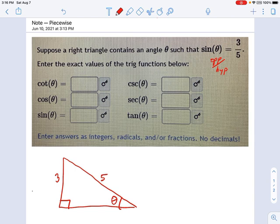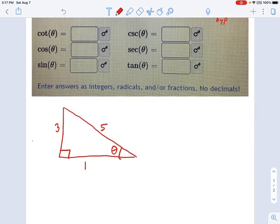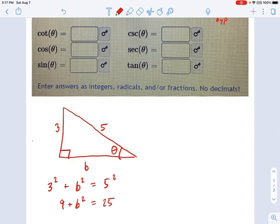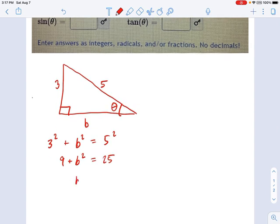And now we're really pretty close to having a complete triangle. We just need to fill in what that third side is. So I'm going to call that b and just say that from the Pythagorean theorem, we know that three squared plus b squared equals five squared. So that means nine plus b squared equals 25, and that means b squared equals 16, and that means b equals four.